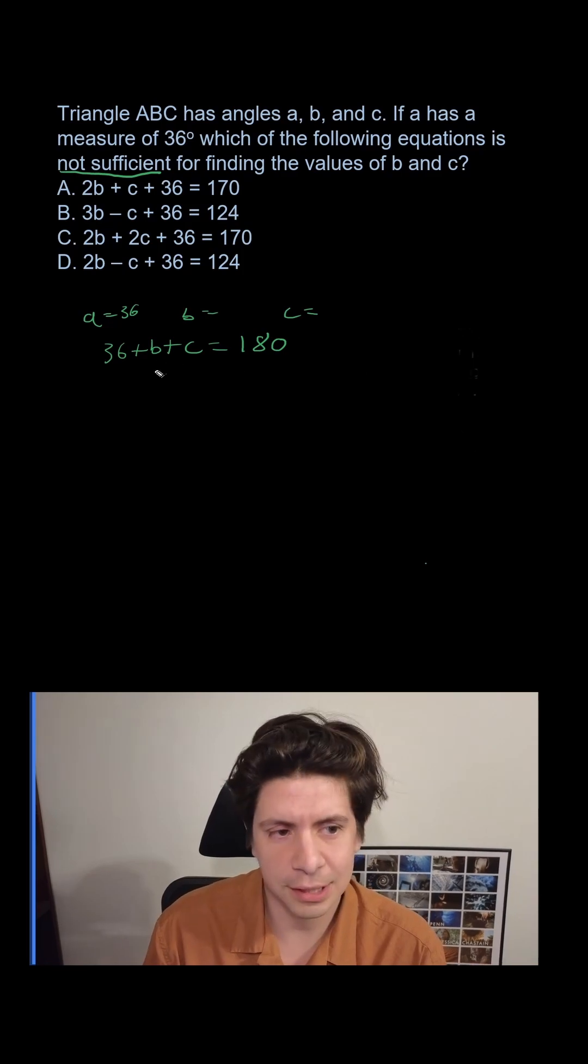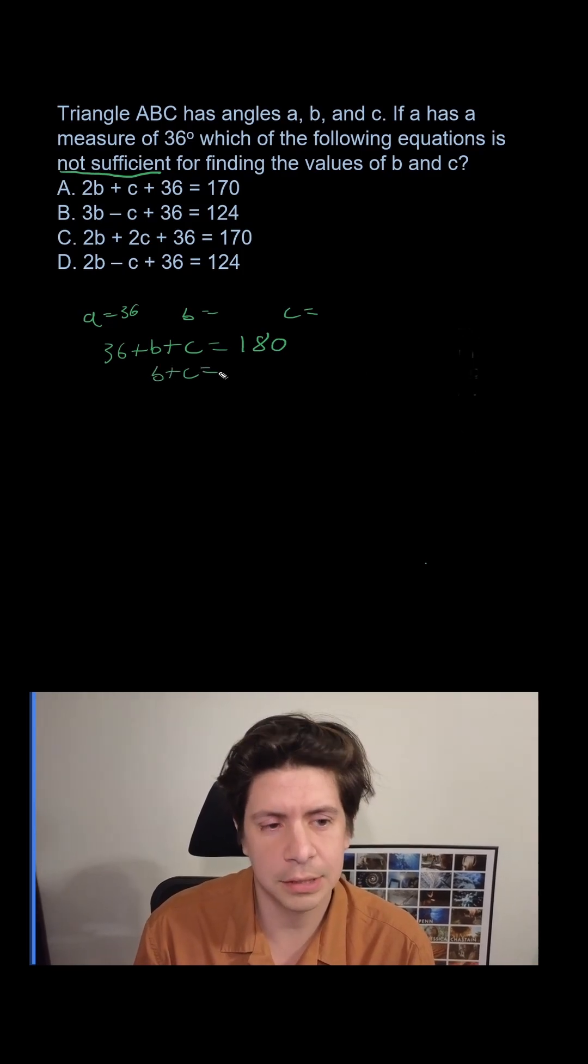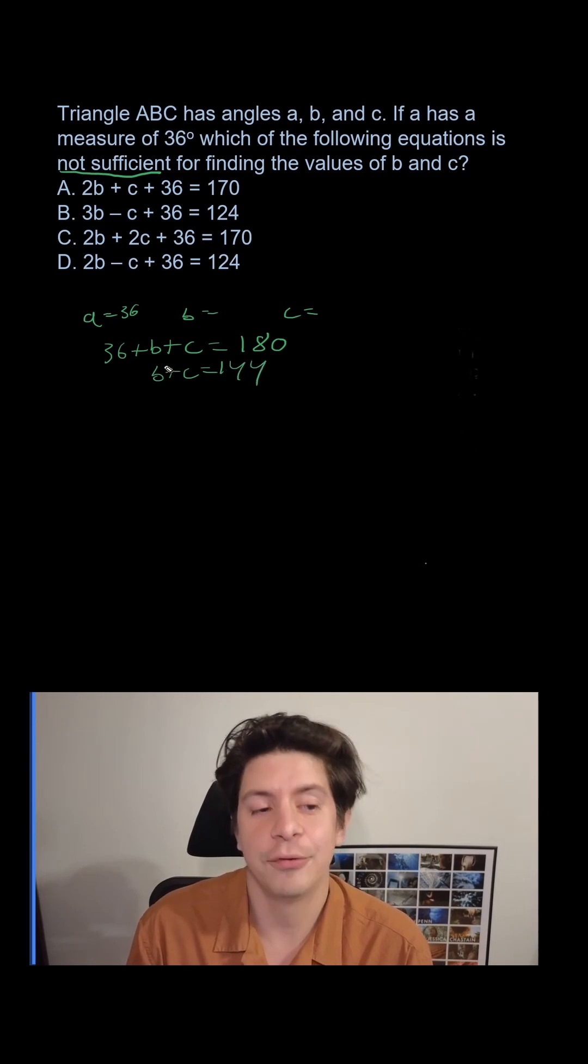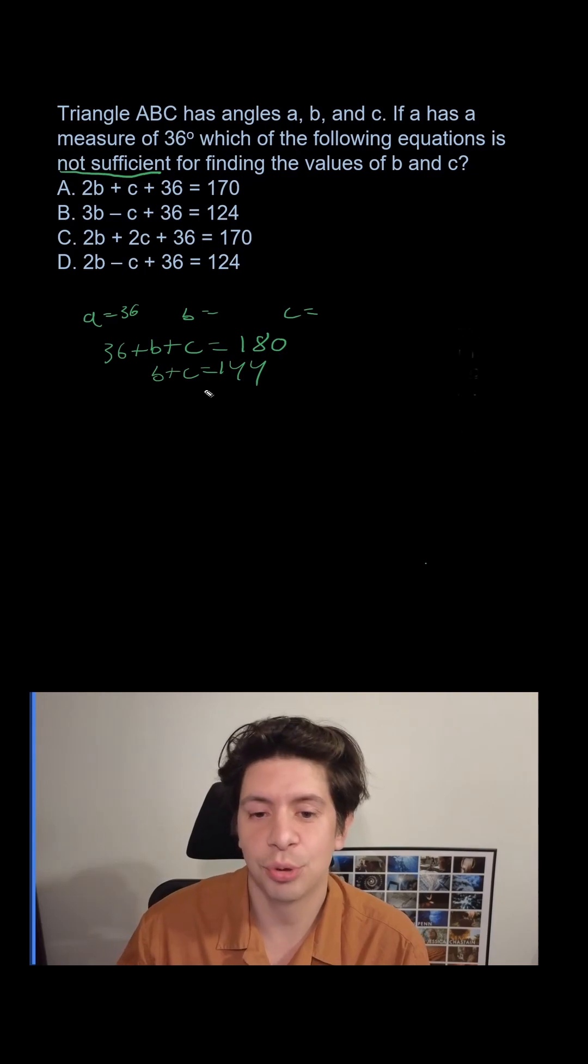So what you see here is you're going to get B plus C equals 144, but it doesn't actually matter what B plus C equals, it's just that B plus C equals something. If we also got B plus C again, they would cancel each other out totally, and then it would not work.